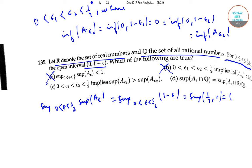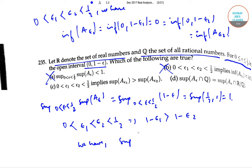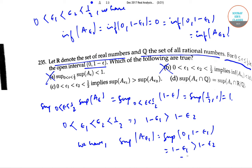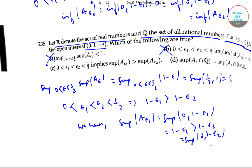For option C: 0 < epsilon_1 < epsilon_2 < 1/2 implies 1 minus epsilon_1 is greater than 1 minus epsilon_2. We have supremum of A_epsilon_1 equals supremum of (0, 1 minus epsilon_1), which equals 1 minus epsilon_1, which is greater than 1 minus epsilon_2, which equals supremum of (0, 1 minus epsilon_2), which equals supremum of A_epsilon_2. So option C is correct.